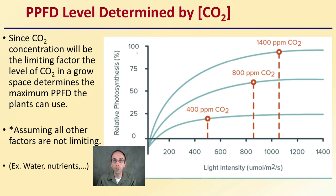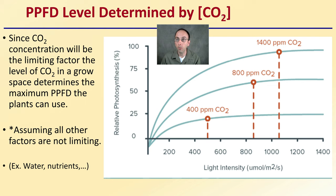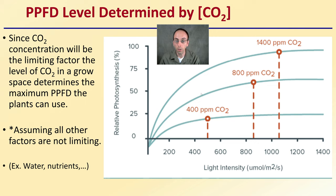The PPFD level is determined by CO2 concentration. Since CO2 concentration will be the limiting factor, the level of carbon dioxide in a growth space determines the maximum light intensity plants can use. This assumes all other factors are not limiting — water, nutrients, and the general health of the plant.